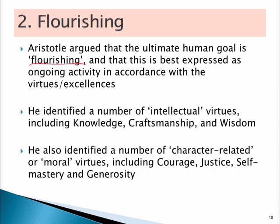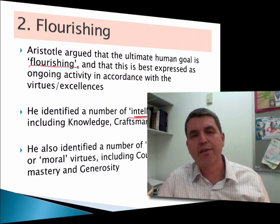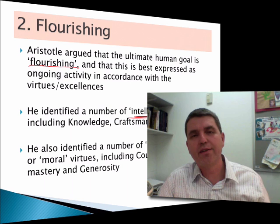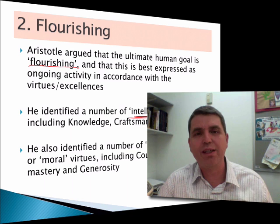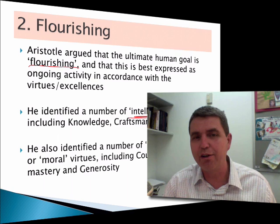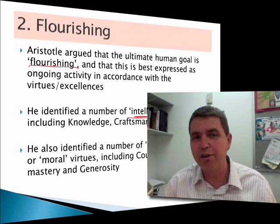Because we have reason, Aristotle identified a number of intellectual virtues — knowledge, craftsmanship, wisdom — but he also had a number of character-based or moral virtues, such as courage, justice, self-mastery, and generosity. Importantly, Aristotle is saying we're not pursuing these virtues in order to achieve some goal like pleasure or prestige. We actually flourish and have a better life just by pursuing the virtues in and of themselves — that is our function, and that's what gives us this life of flourishing.